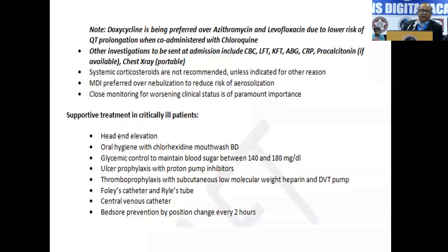Simple measures do matter in mild and moderate disease: head end elevation, there is some upcoming data on use of povidone-iodine/betadine mouth gargles, adequate glycemic control, PPI could be used. Most importantly, prevent VTE and PE. To reduce contact — with multiple entries into the patient's room — a Foley's catheter plus or minus Ryle's tube if oral intake is not good should be considered at the outset. Advisable to have a central venous catheter and posture change.